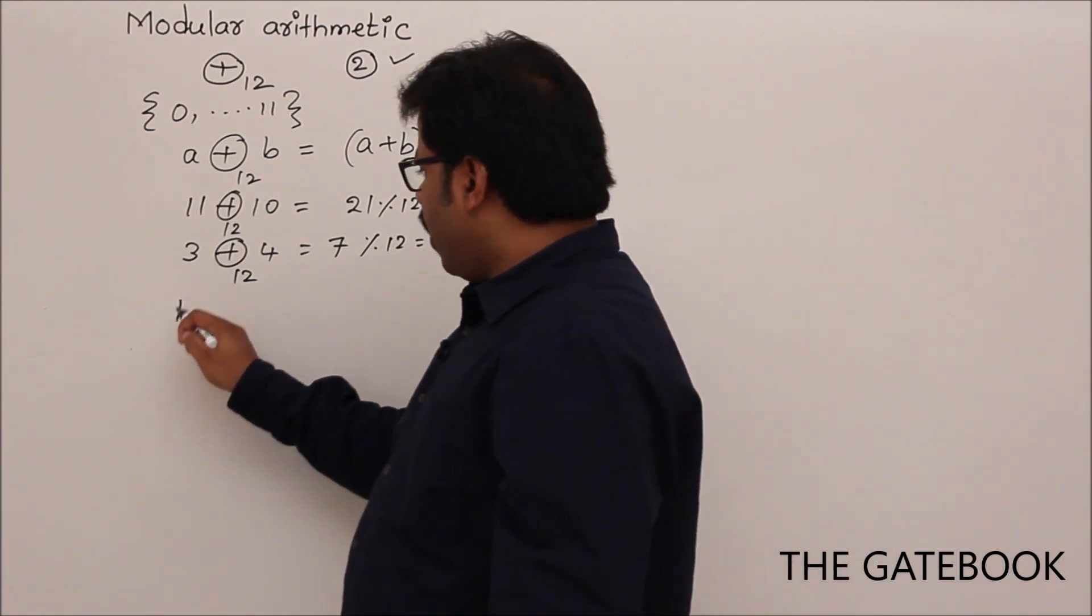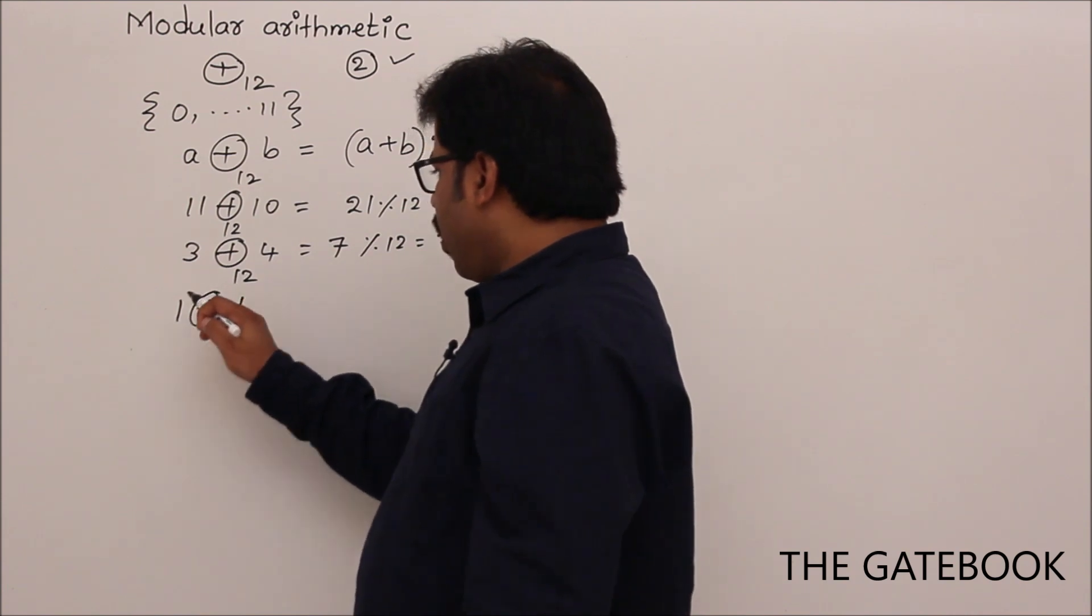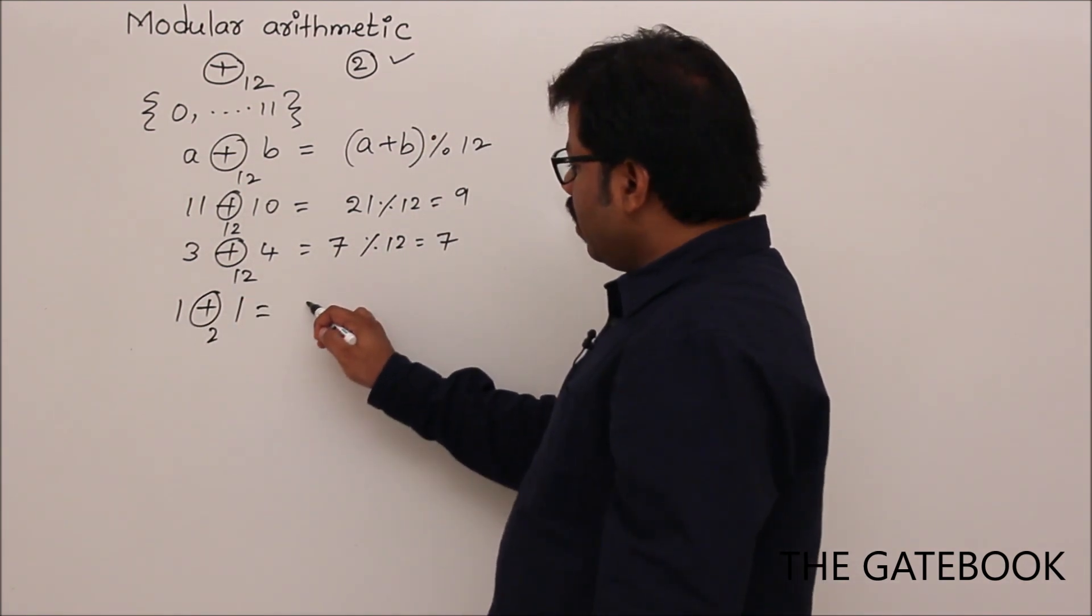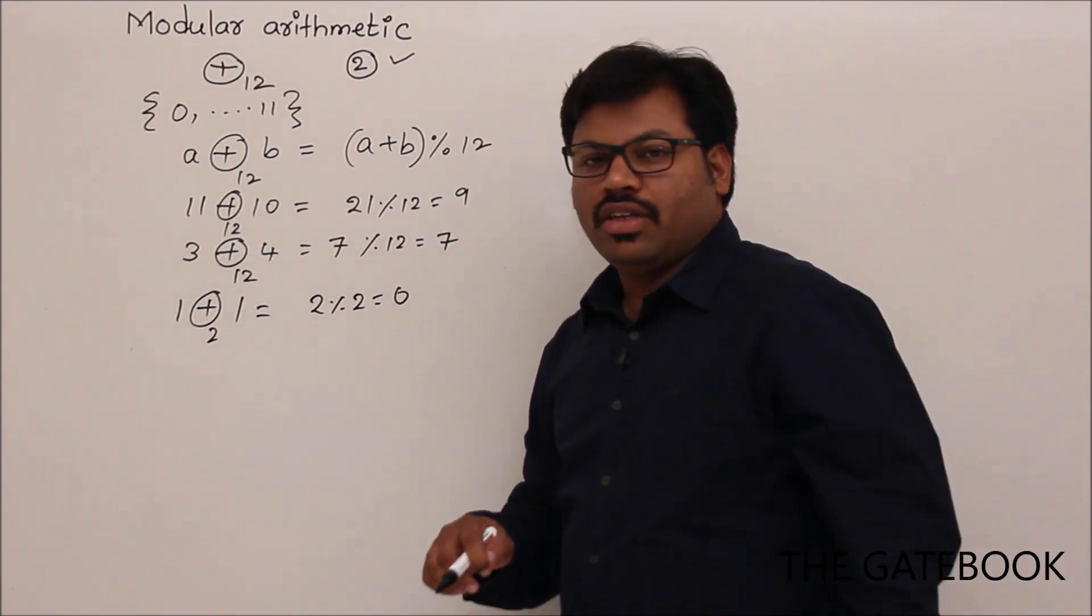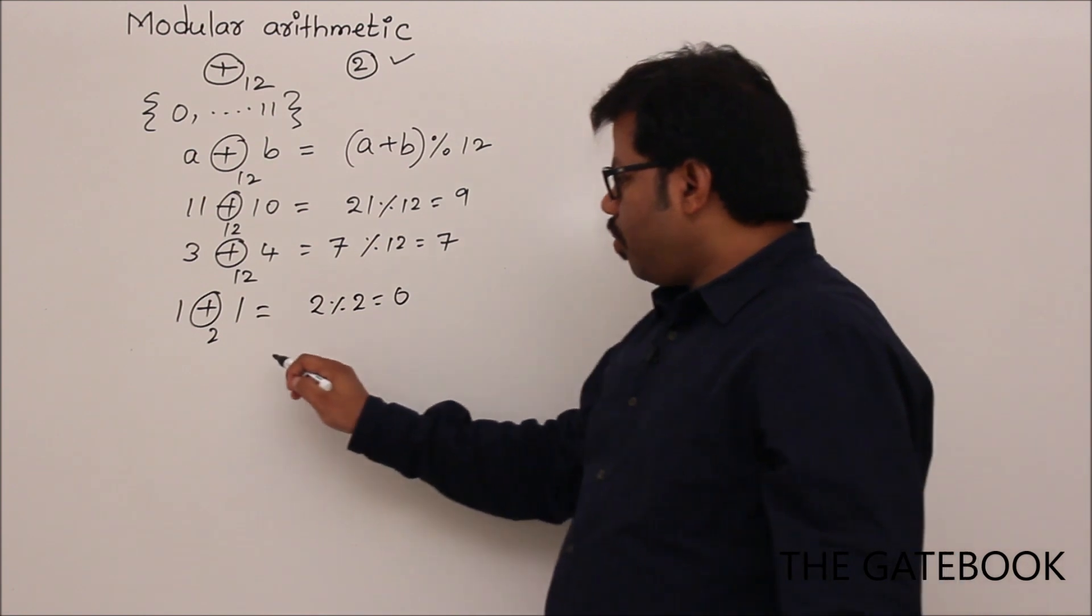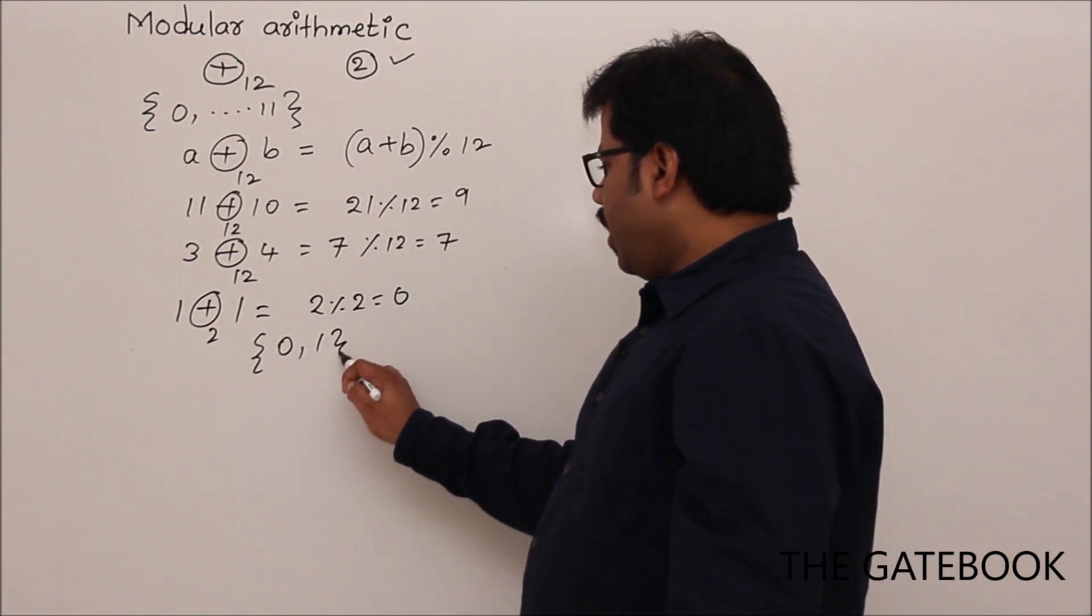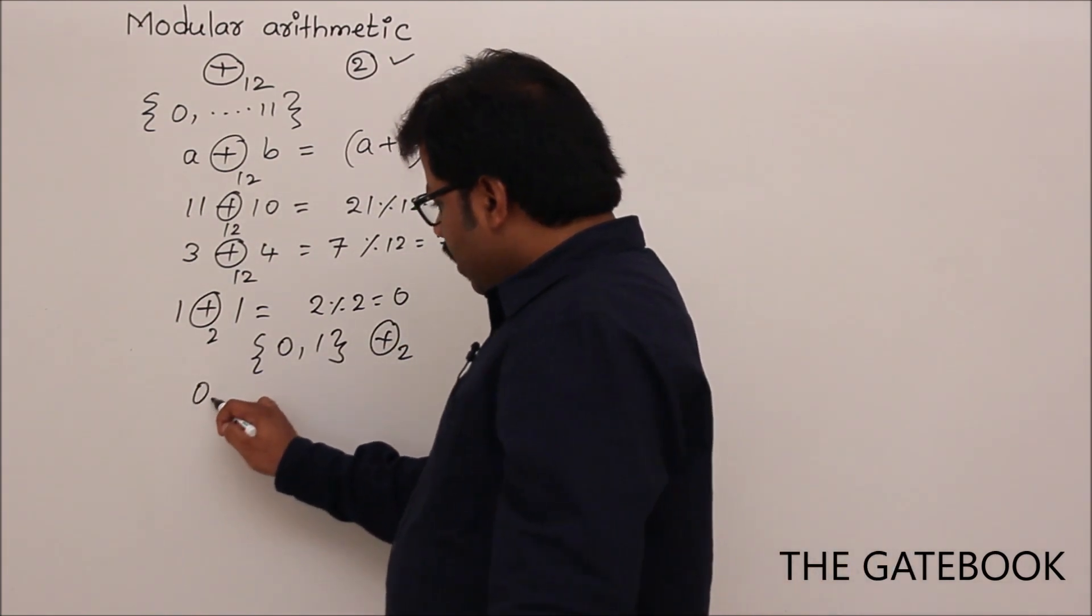Example, if you have 1 and 1, then 1 plus 1 is actually 2, right? But in arithmetic modulo 2, 1 plus 1, base 2 is nothing but 1 plus 1, 2, 2 percentile 2, 0. So similarly, I can define all possibilities. The range of numbers are only 0, 1, right? This is domain. And if I use arithmetic modulo 2, then the result will be like this.